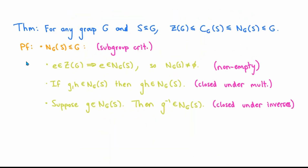Since we have a subset of our group which is non-empty, closed under multiplication, and closed under taking inverses, we can conclude immediately from the subgroup criterion that the normalizer of S in G is in fact a subgroup of G.